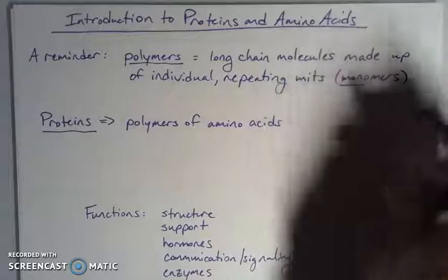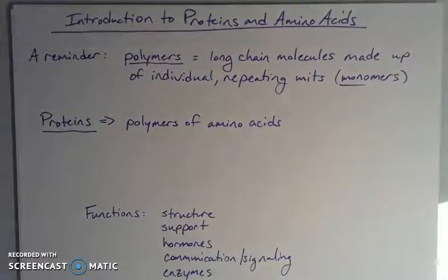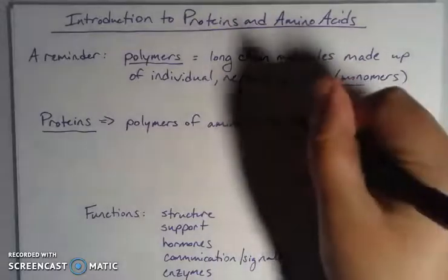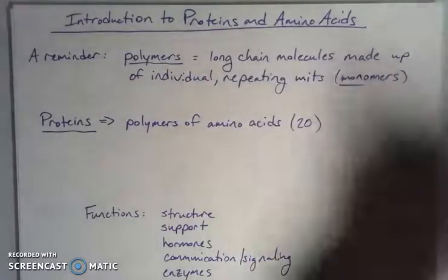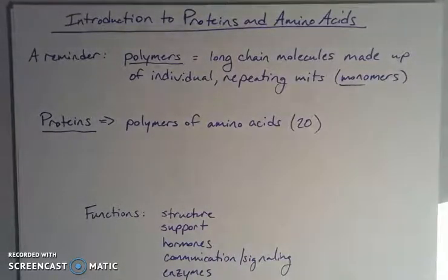Poly meaning many, mono meaning one. These monomers make up larger molecules called polymers, and proteins, which are one of the four biomolecules, meaning molecules that have biological significance, are polymers of amino acids. There are 20 different amino acids.